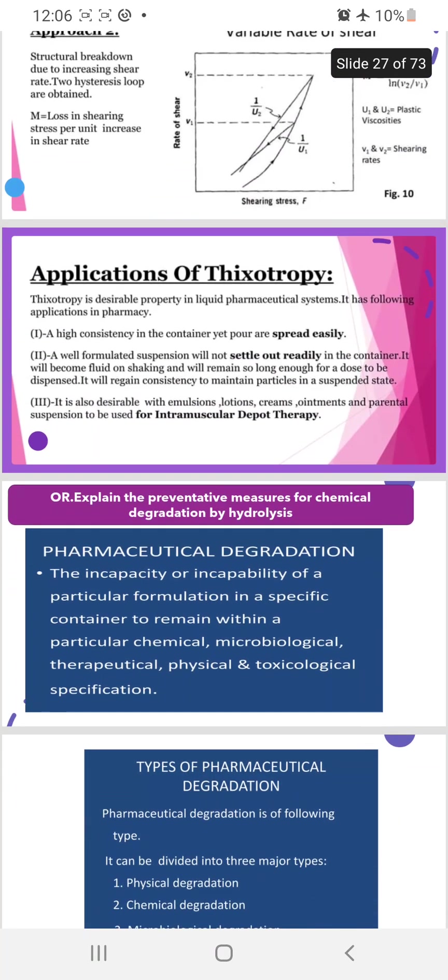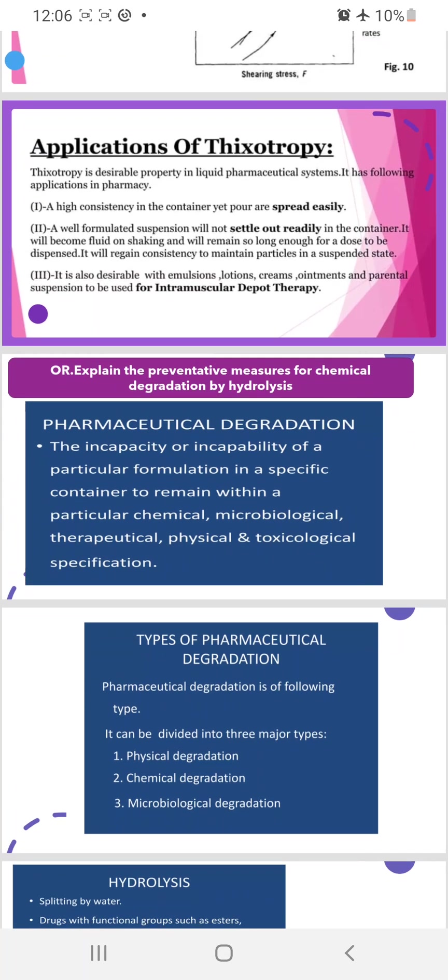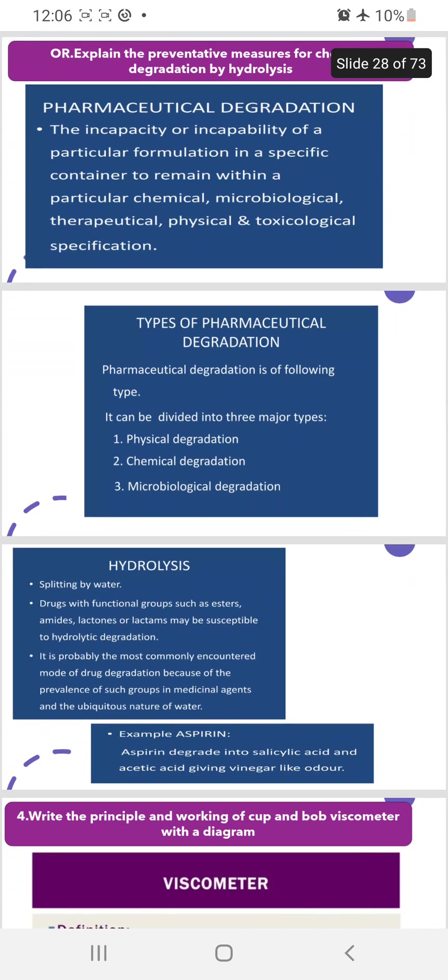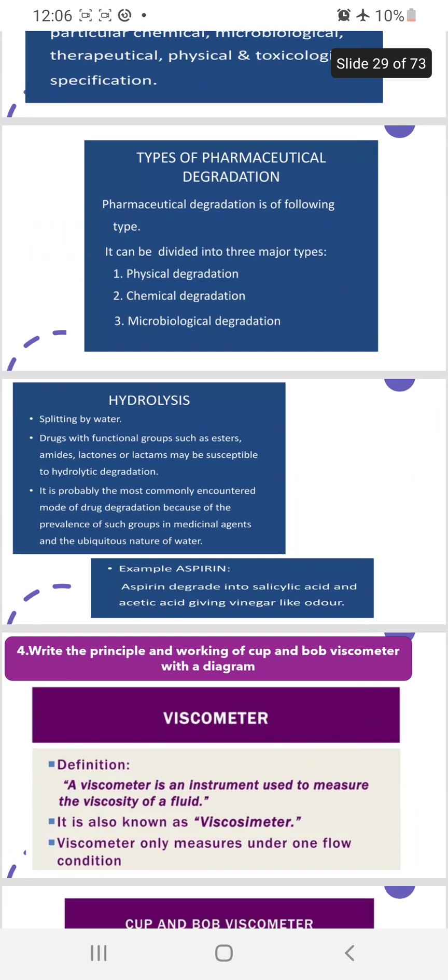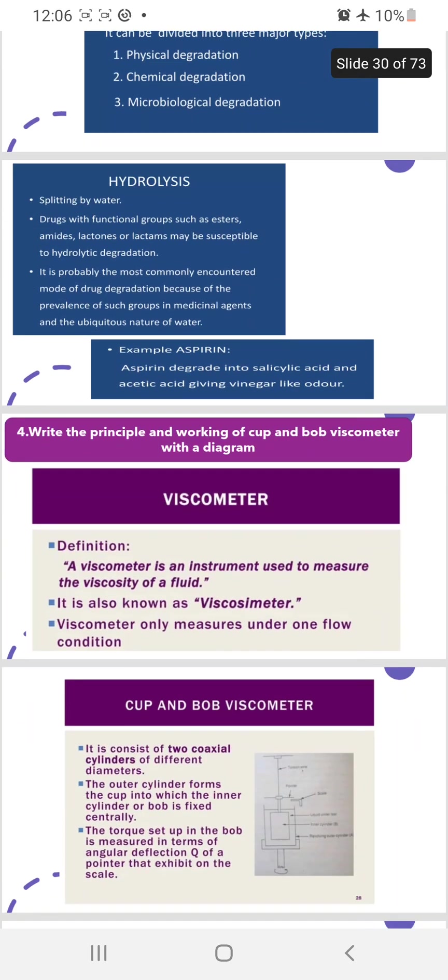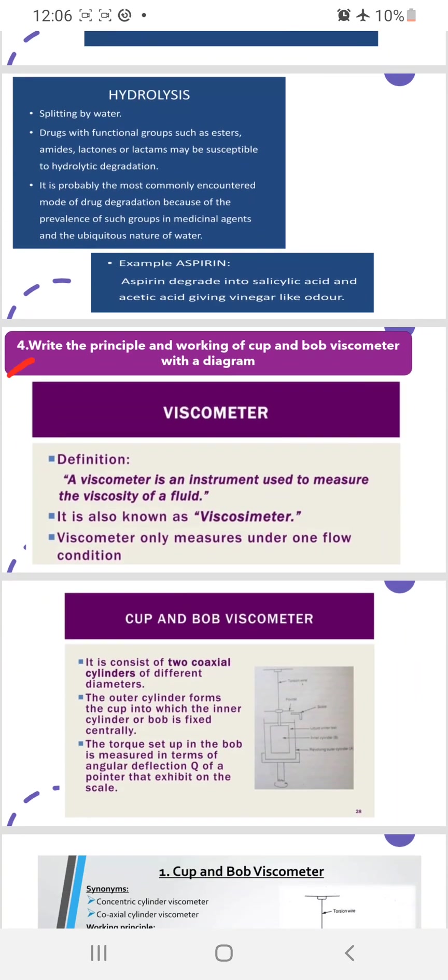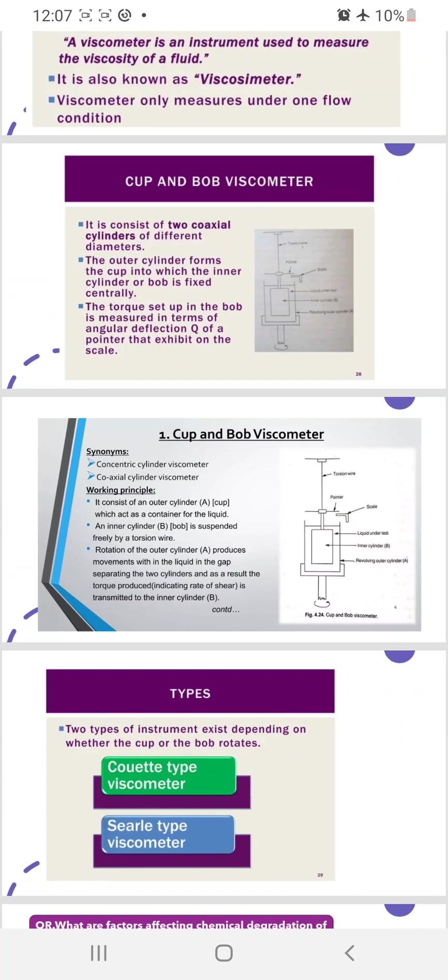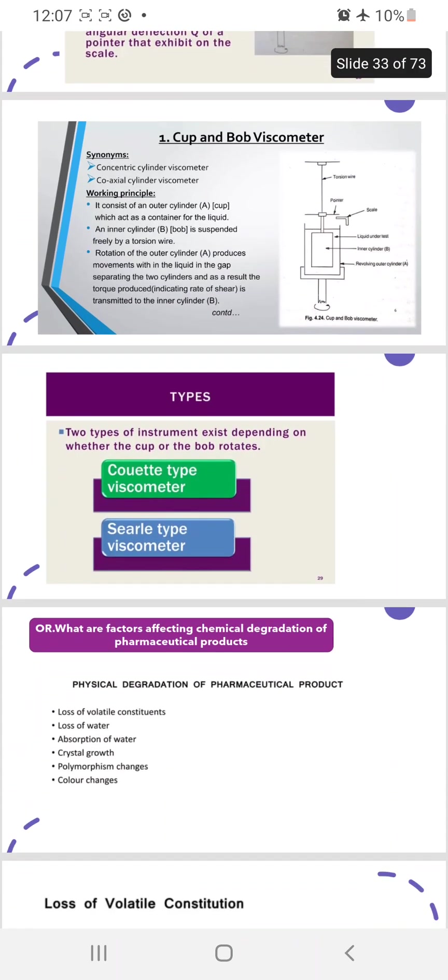Next question: explain the preventative measures for chemical degradation by hydrolysis. You have to write pharmaceutical degradation, then types of pharmaceutical degradation. In chemical degradation, this hydrolysis will come. They asked hydrolysis, you write hydrolysis and give the example. Fourth question: write the principle and working of cup and bob viscometer with a diagram. First write the definition of the viscometer and explain the working principle. In cup and bob viscometer you will get curator type and serial type.